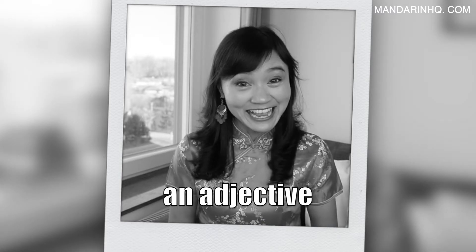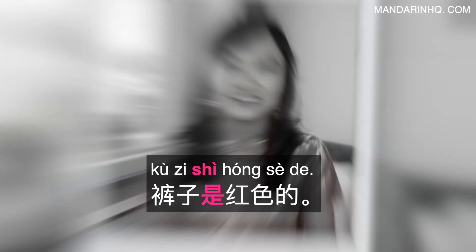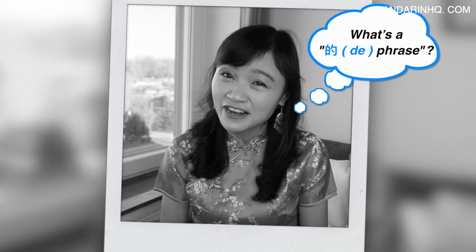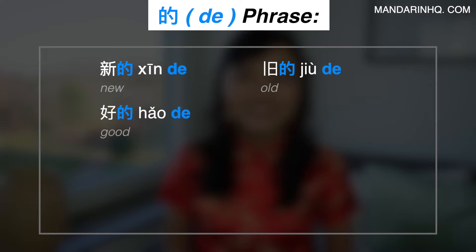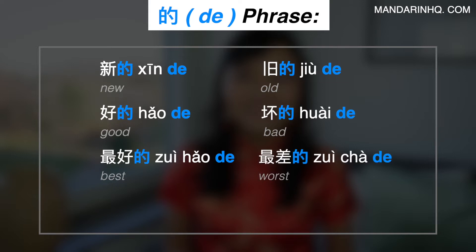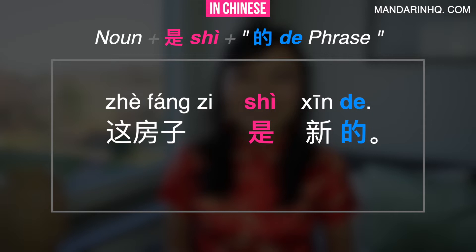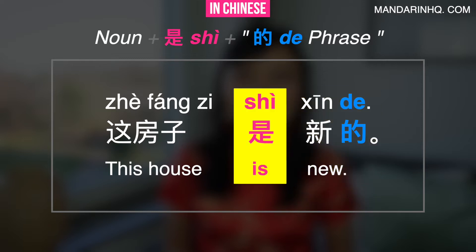Maybe you're thinking: I've heard sentences where shì appears before an adjective — like 她是开心的 or 裤子是红色的. And you're right. There's one important exception: 的-phrases. A 的-phrase is any phrase that ends with 的, like 新的, 旧的, 好的, 坏的, 最好的, 最差的, 辣的, 甜的. In phrases like this, you do use shì before the adjective. For example, 这房子是新的 — 'This house is new.' 新的 is a 的-phrase, so we use shì before it.